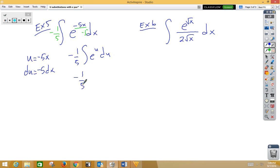So that's negative 1 fifth e to the u plus c, which is negative 1 fifth e. U is really negative 5x to the negative 5x plus c.